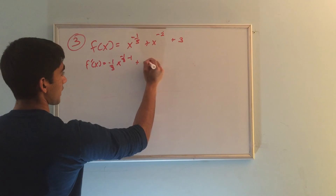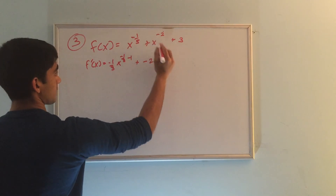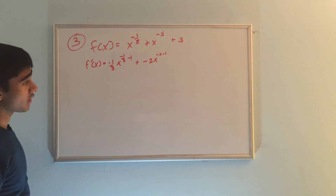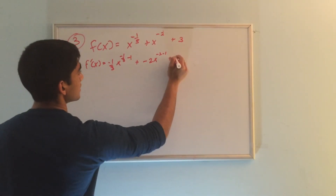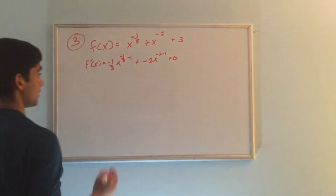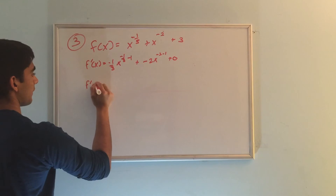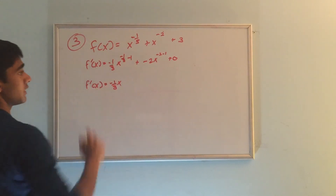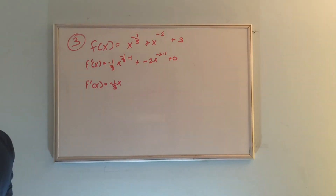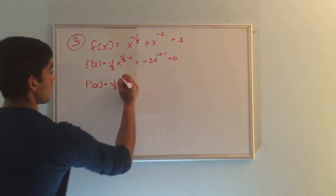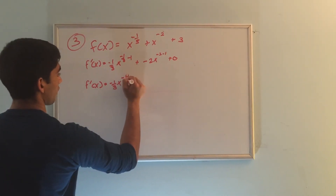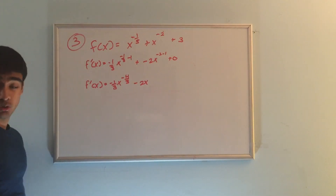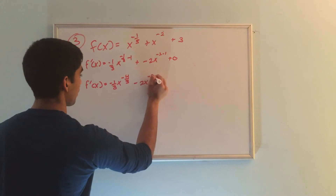For the second term, we do the exact same thing — bring down the exponent, then subtract 1 from it. And remember, the derivative of a constant is 0, so we add 0. Simplifying, we get f prime x equals negative 1 third x to the negative 1 third minus 1, which is negative 1 third minus 3 over 3, equaling negative 4 over 3, minus 2x to the negative 2 minus 1, which is negative 3.